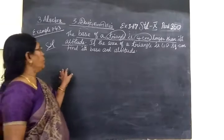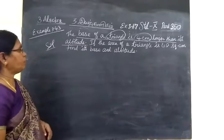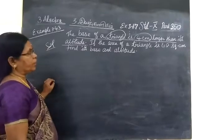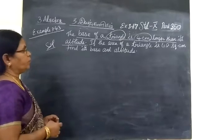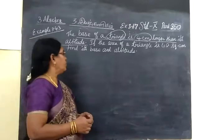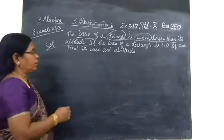Now we see part 350 is under 3.43. The base of a triangle is 4 cm longer than its altitude. If the area of the triangle is 48 cm square, find its base and altitude.